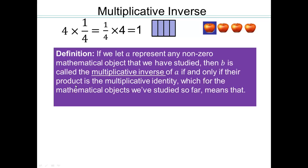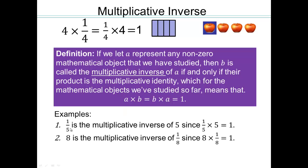The formal definition: if a is a non-zero mathematical object, then b is the multiplicative inverse of a if and only if their product is the multiplicative identity. Since 1 is our multiplicative identity, we want 2 things multiplying together giving us 1. So a fifth times 5 is 1, meaning 1 fifth is the multiplicative inverse of 5, and 5 is the multiplicative inverse of 1 fifth.